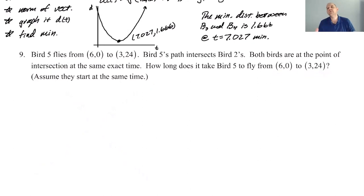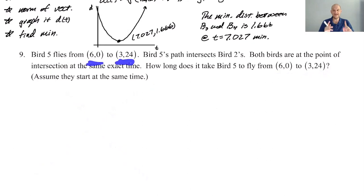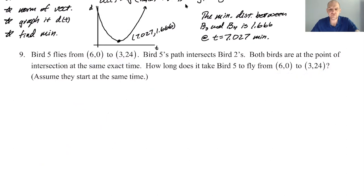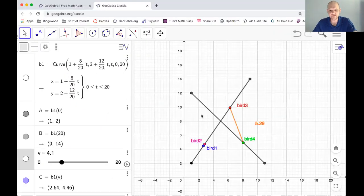I'm going to propose two different ways to solve this. The first thing I'm going to do is switch over to GeoGebra and plot (6, 0) and (3, 24), and plot the segment between them just so we can see what's happening. Let's go to GeoGebra and do that and make some sense of this.